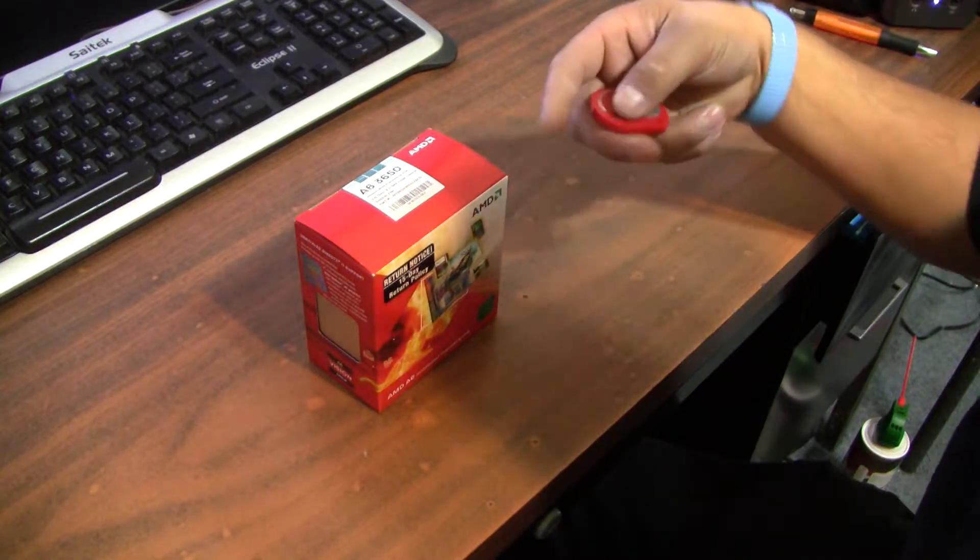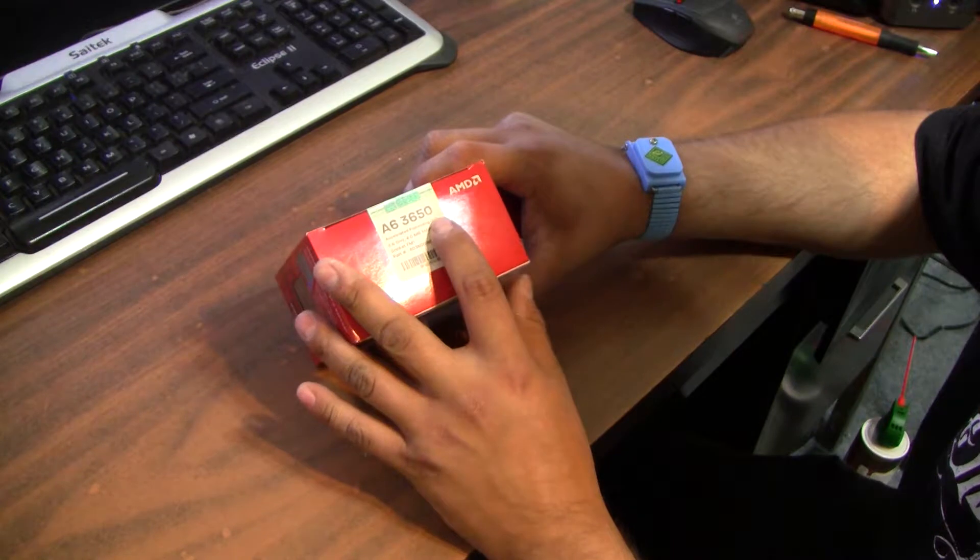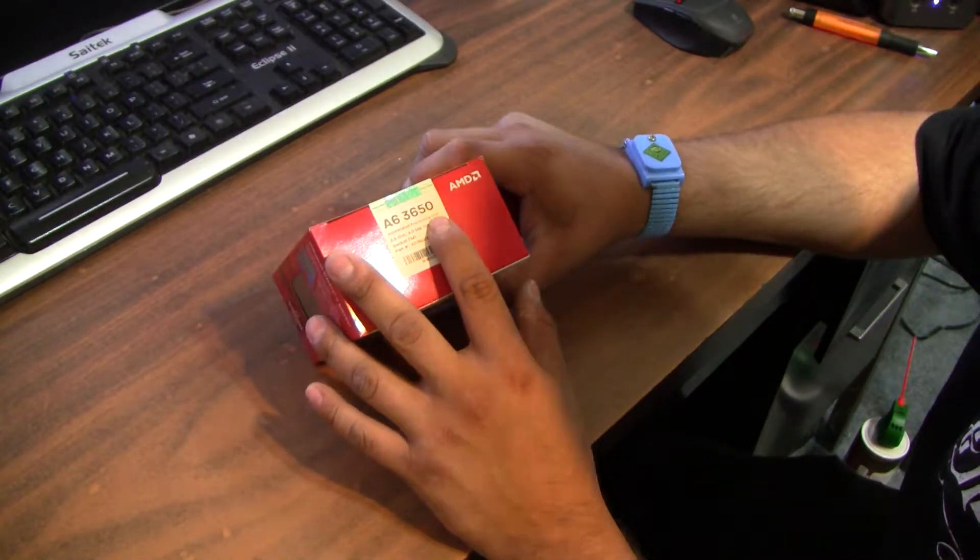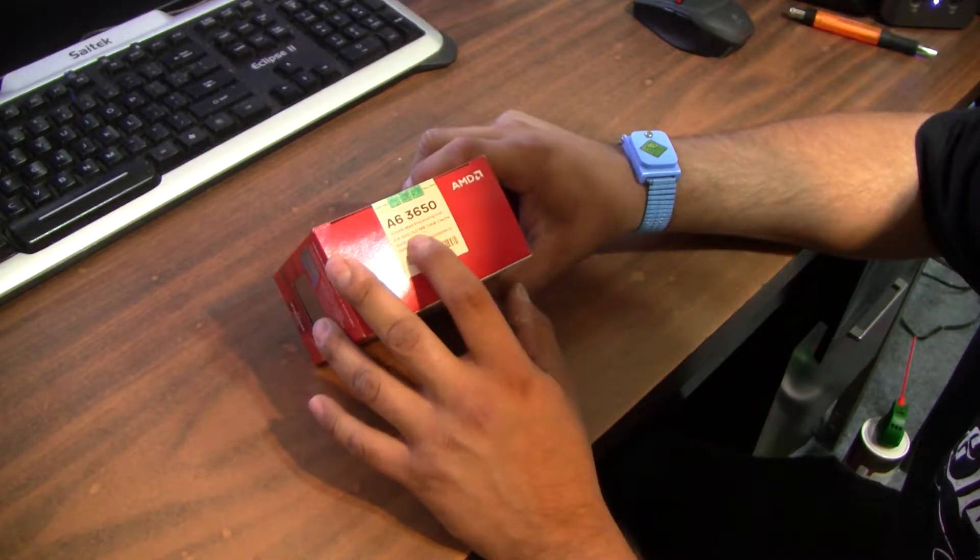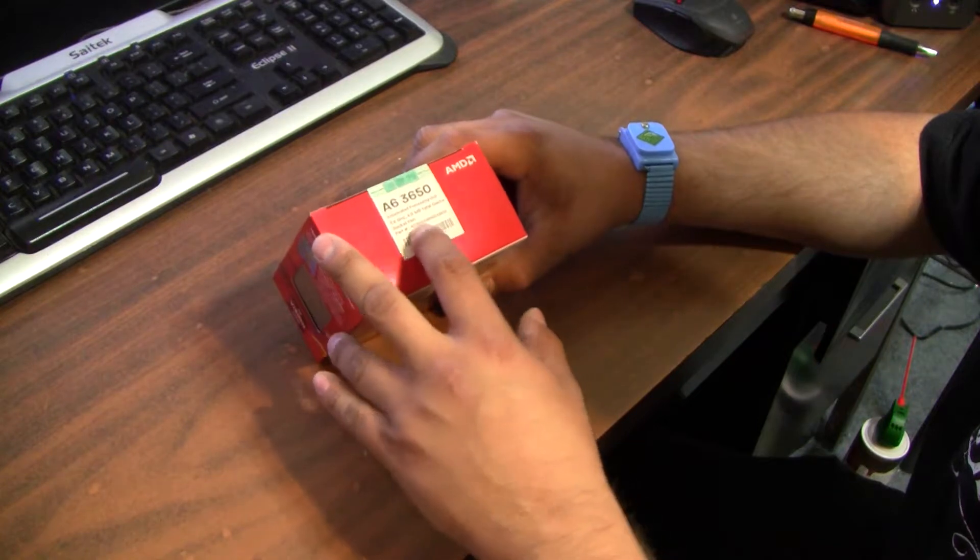Hey guys, today I'm going to bring you an unboxing of an AMD A6-3650 APU Accelerated Processing Unit FM1 Socket. It's 2.6 GHz, 4.0 MB of total cache, again FM1 socket.